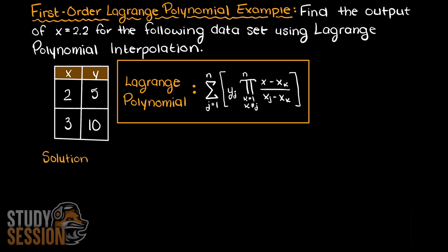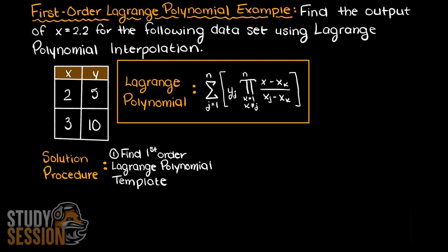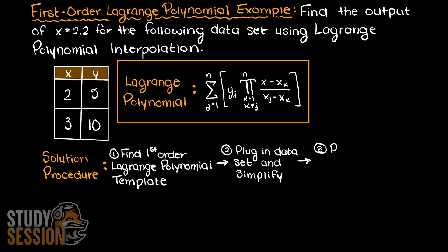Now let's talk about how we solve this problem. We will first begin by using the formula above to develop our general first order Lagrange polynomial equation. Then we are going to plug in our known discrete data points, simplify our polynomial, and then lastly, once we have the Lagrange polynomial developed, we can plug in the input that we are asked for and finally solve for the output.